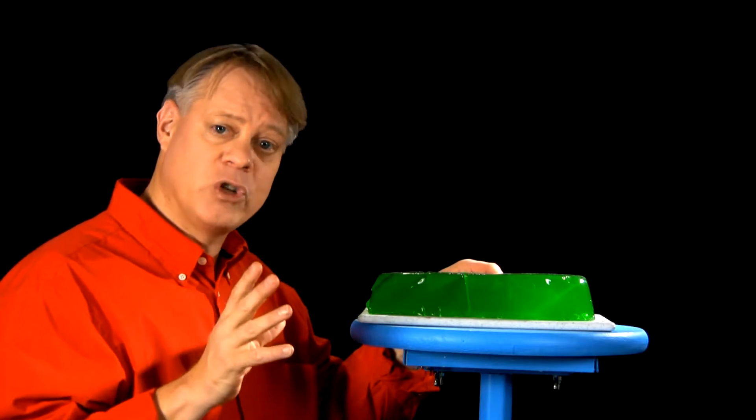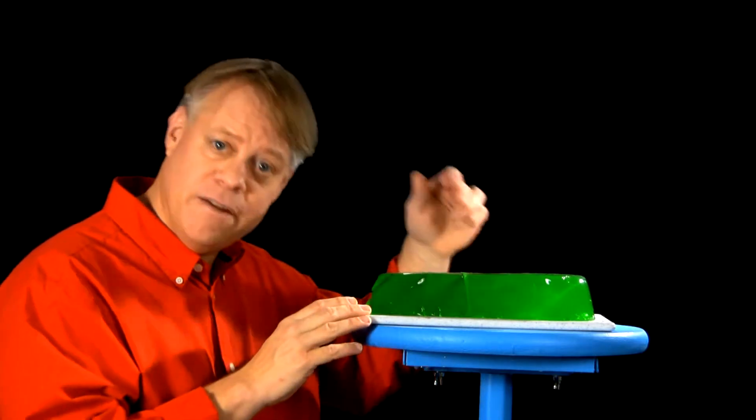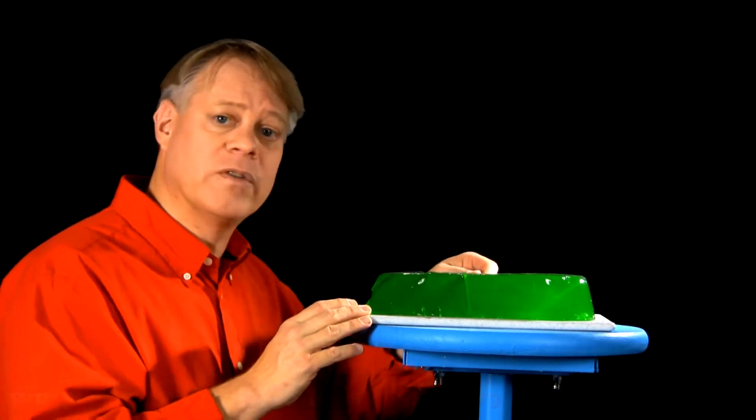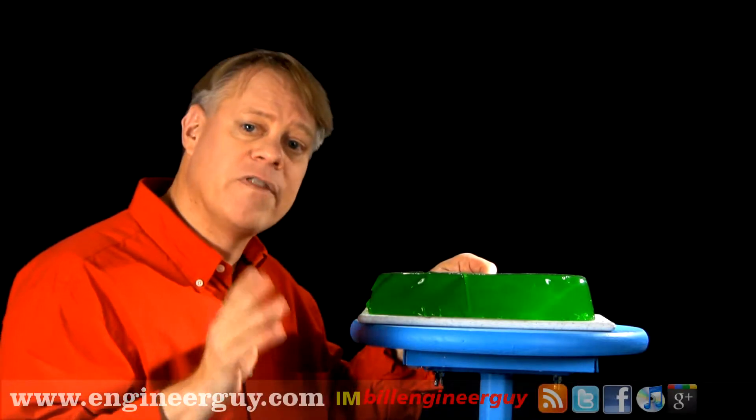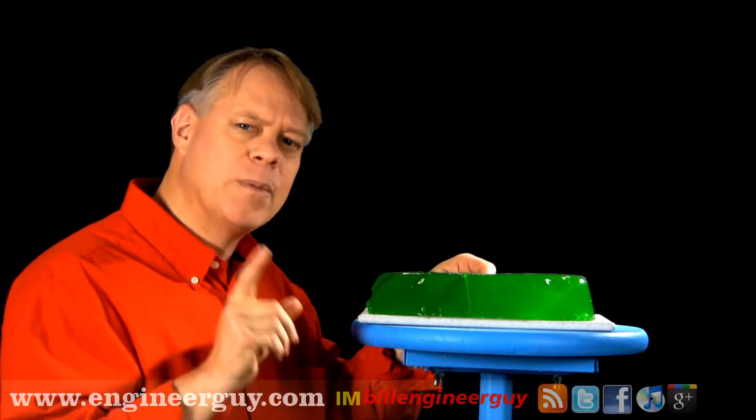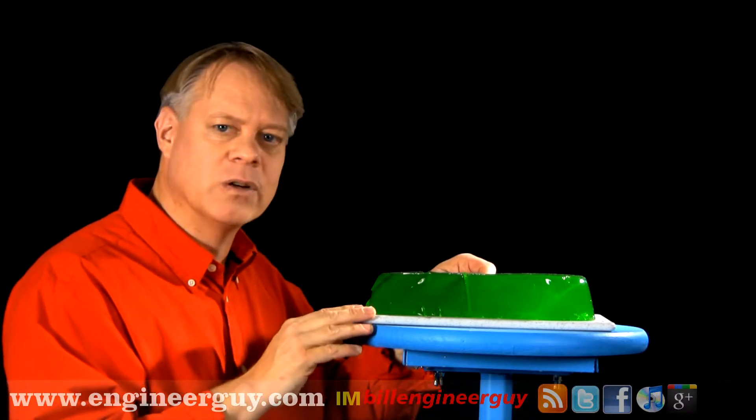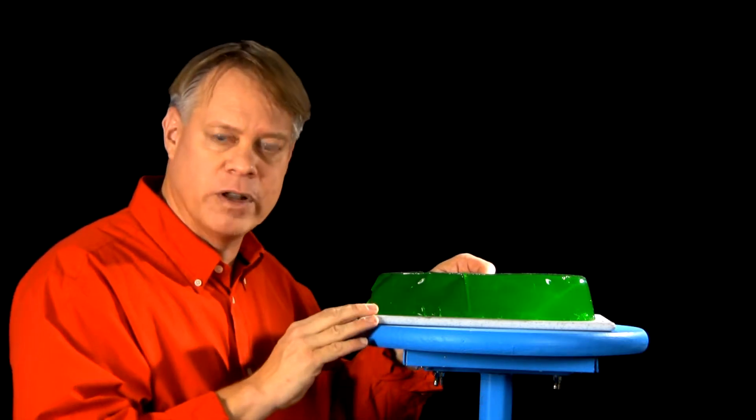But inside an atomic clock there's a chunk of quartz of a similar shape that if we tap it, which we do with a jolt of electricity, it will oscillate some five million times per second. It keeps time to about one second in 90,000 years, a fraction of the accuracy needed for an atomic clock.